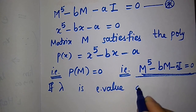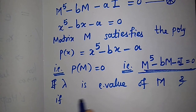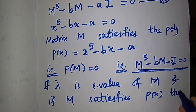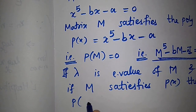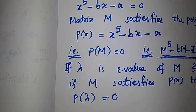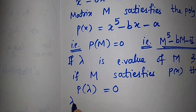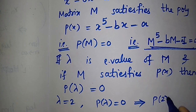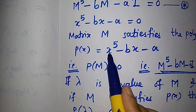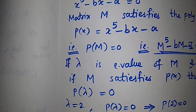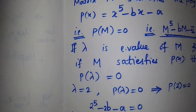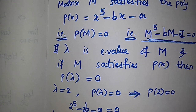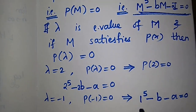Since M satisfies polynomial p(x), every eigenvalue λ of M must also satisfy p(λ) = 0. Taking λ = 2: p(2) = 0 gives 2⁵ - 2b - a = 0, i.e., 32 - 2b - a = 0. Taking λ = -1: p(-1) = 0 gives (-1)⁵ - b(-1) - a = 0, which is -1 + b - a = 0.